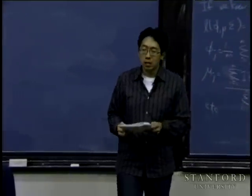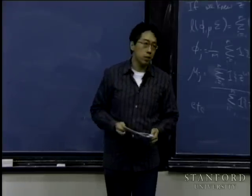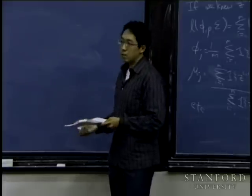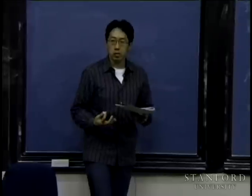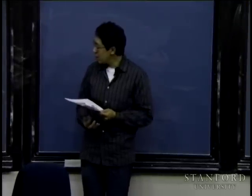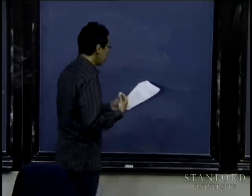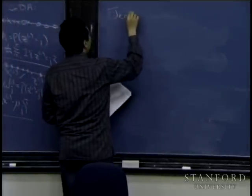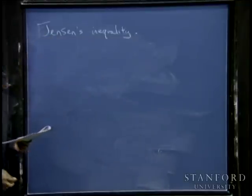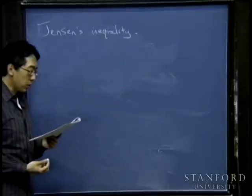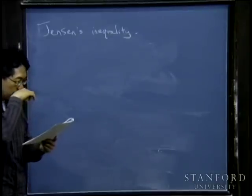What you just saw was a special case of EM for the mixture of Gaussians. I'll now present a broader, more general view of the EM algorithm. As a precursor to deriving this general view, I need to describe Jensen's inequality, which we'll use in the derivation.